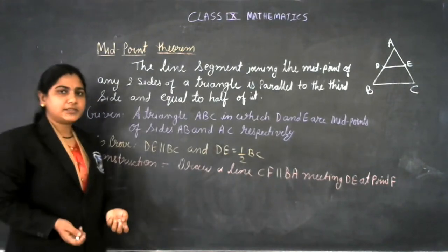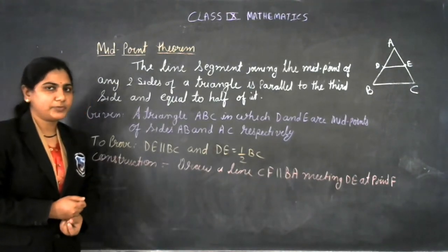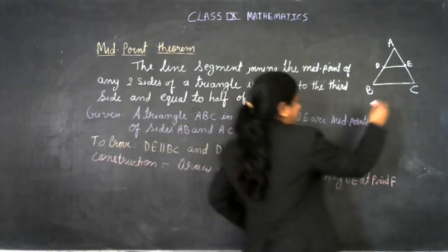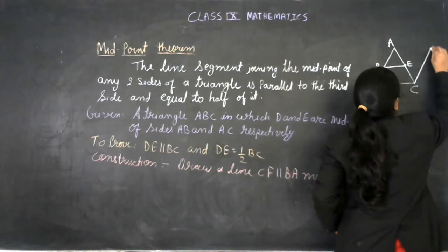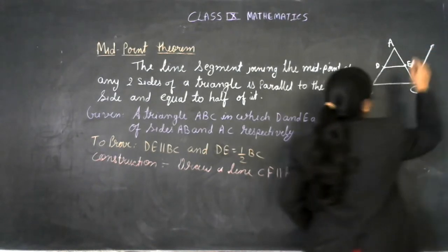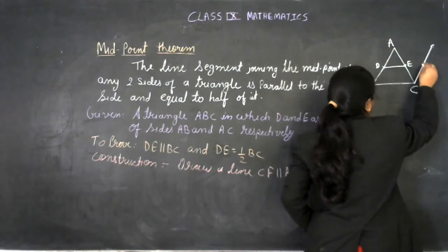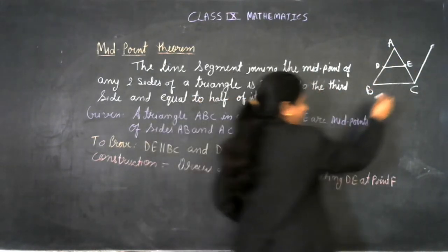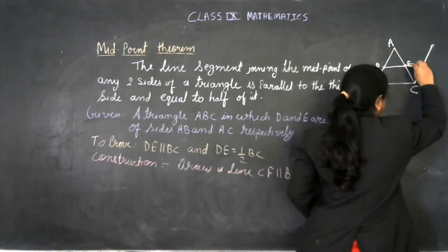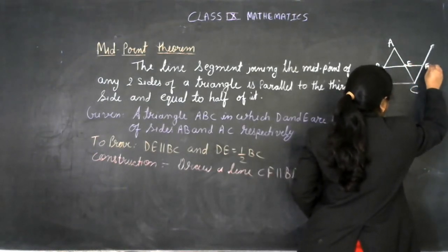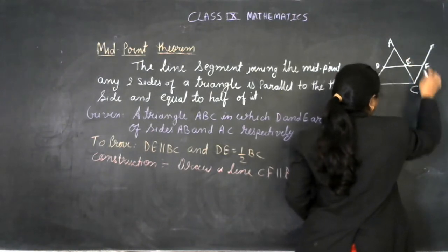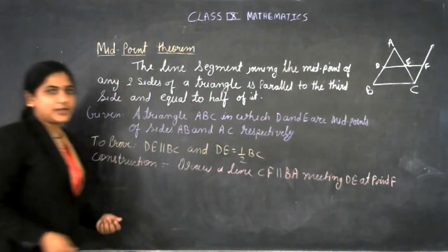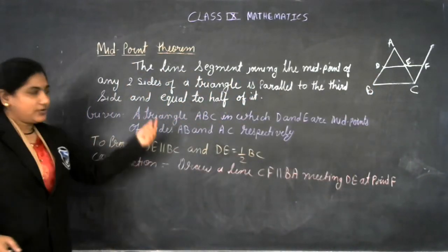For proving that DE is parallel to BC, we have to construct one line segment. Suppose we construct line CF, which is parallel to line AB, and produce DE to meet that line at point F. So CF is parallel to DE, which we have constructed.